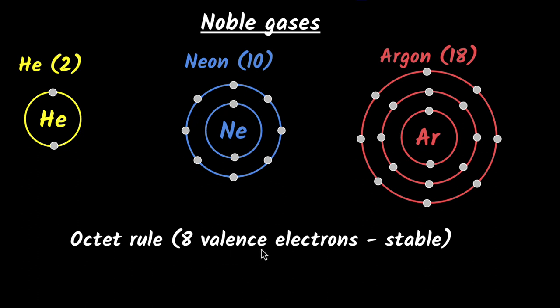If you have eight valence electrons, you get stability and you will not react with anything. This helps us understand how other atoms are going to react, because their motivation is to achieve octet.